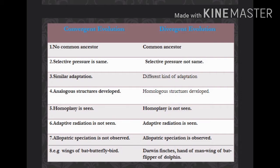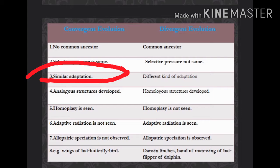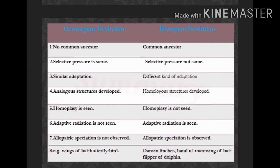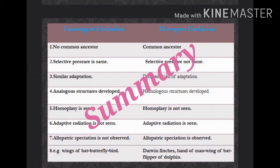Moving on to the third point: in convergent evolution, a similar kind of adaptation is seen in the organism. In divergent evolution, a different kind of adaptation is seen.